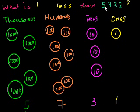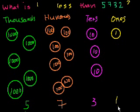Which makes sense — you take away 1 from 5,732. You're taking 1 away from the 1's place, so the 2 goes down by 1 to become a 1.